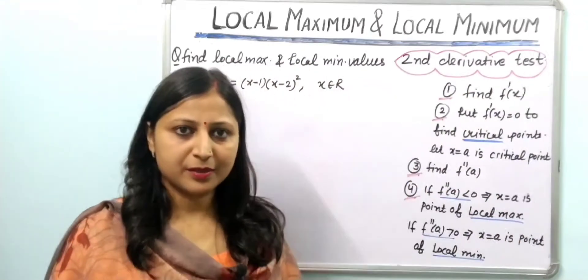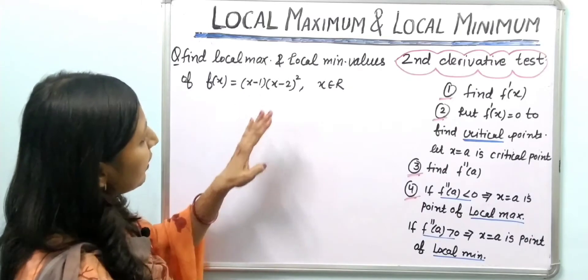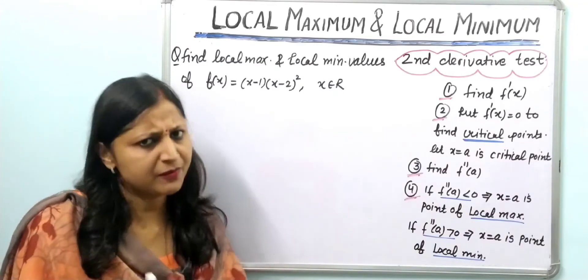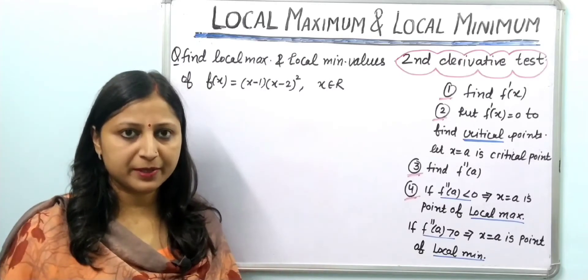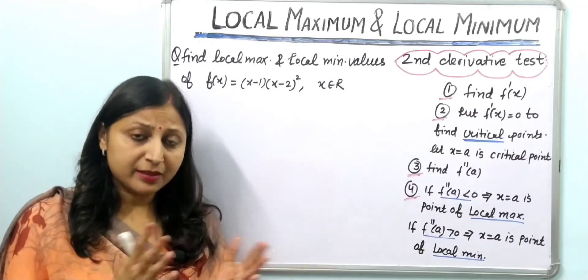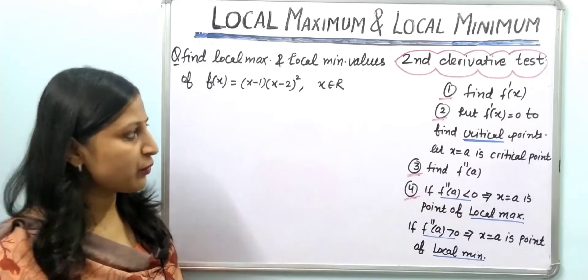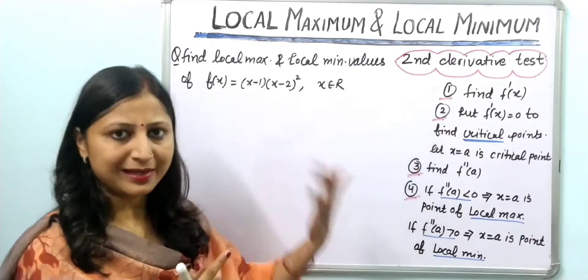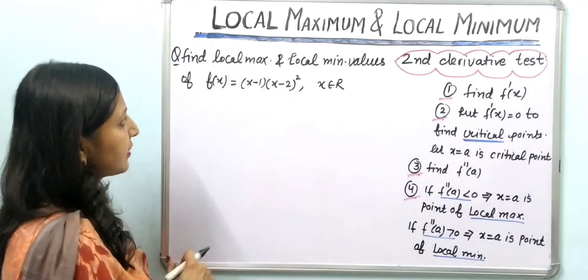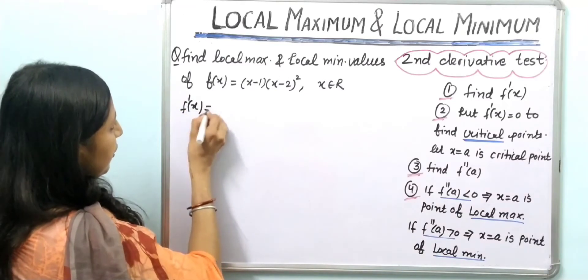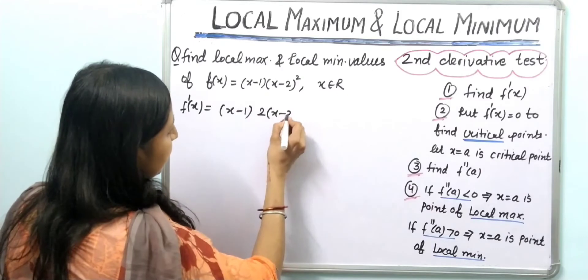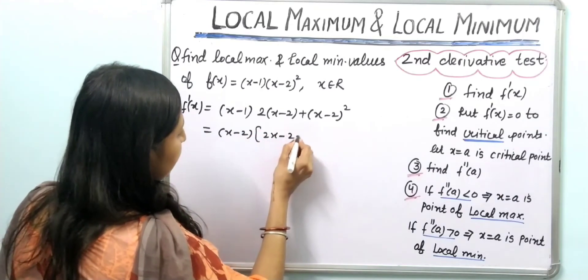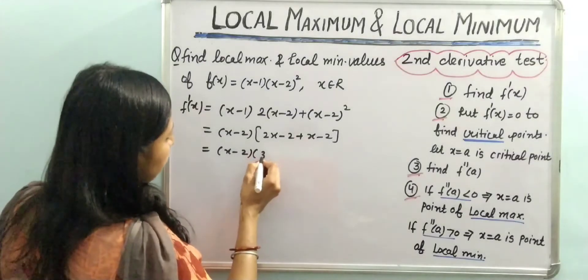Now let us move to questions. The question is: find local maximum and local minimum values of this function. In the previous lecture we found these values with help of the first derivative test, but there is also a second derivative test available which gives results comparatively faster. The first step is to find f'(x). Applying the product rule, because it is a product of two functions, we get f'(x) = (x-2) · (3x-4).